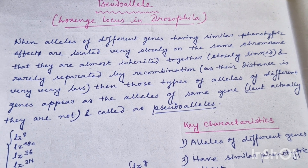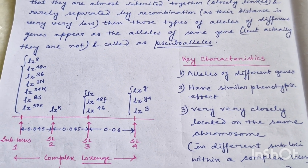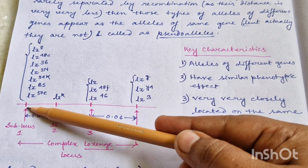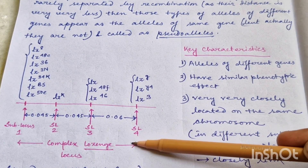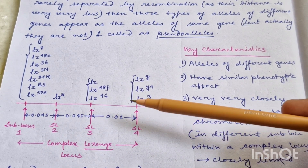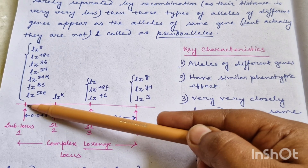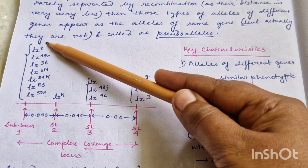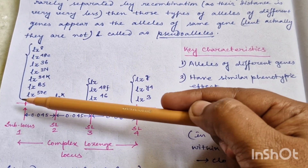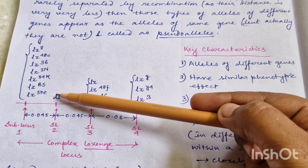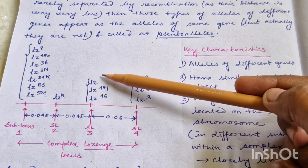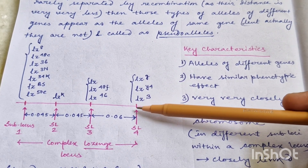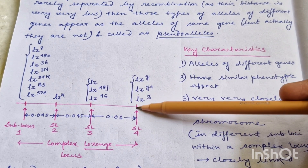Let us understand this with an example from the Lozenge locus of Drosophila and understand key characteristics one by one. This is a complex Lozenge locus of Drosophila, where you can see there are four subloci. Each sublocus is carrying different genes, and all of the alleles listed are alleles of those specific genes. The seven alleles at sublocus one, the allele at sublocus two, the three alleles at sublocus three, and similarly three alleles at sublocus four.